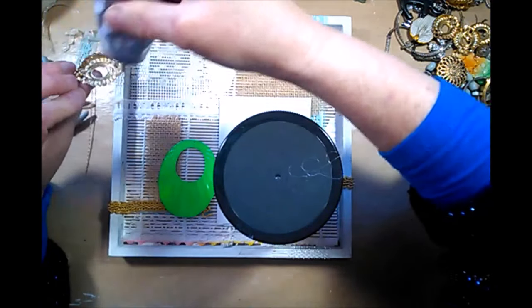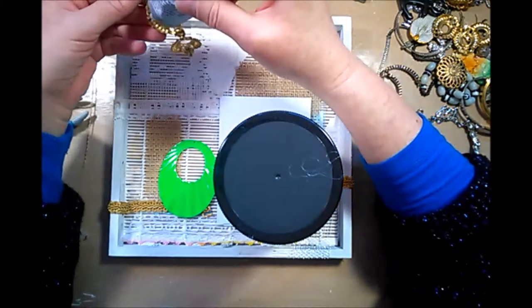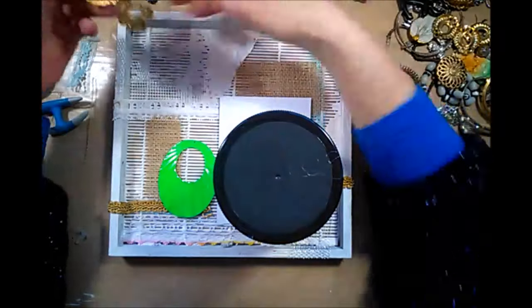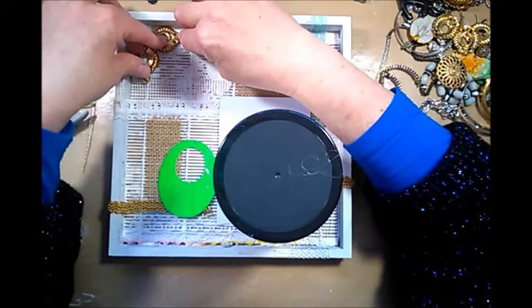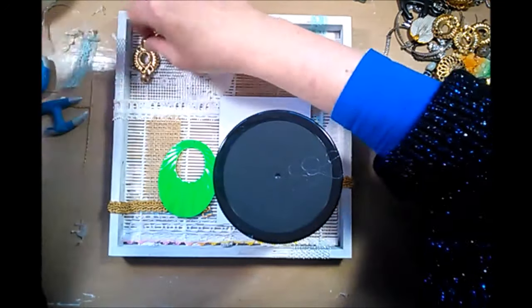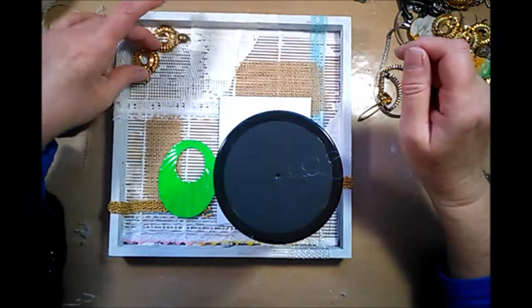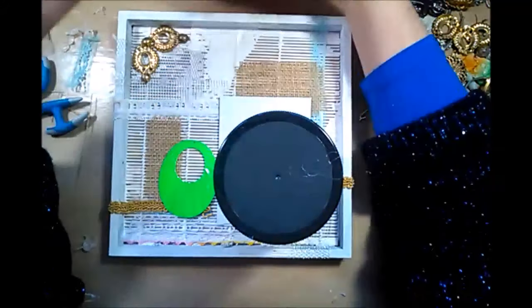So now I'm switching to a different glue and that is E6000 because it works really really well with metals but it doesn't dry immediately which means it gives me some room to maneuver, a little room to shift things around.